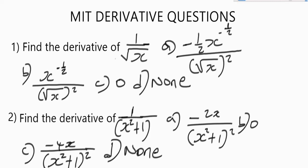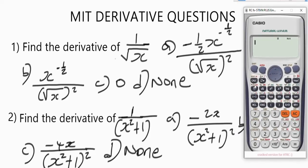This is the Casio fx-101 ES Plus scientific calculator. For those of you watching my video for the very first time, I'm going to start from the beginning and explain all the processes involved in solving differentiation with the Casio calculator. The first step you have to follow will be to reset the calculator.